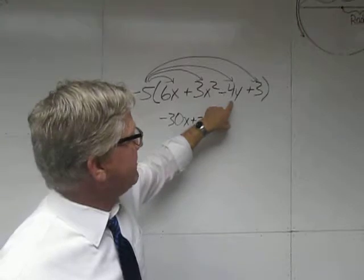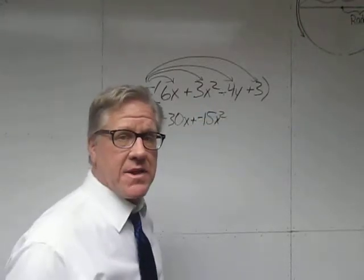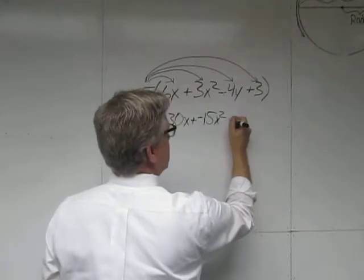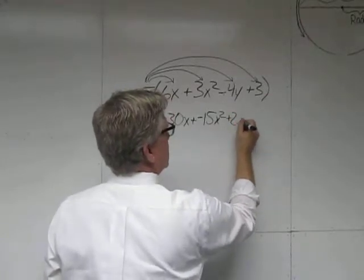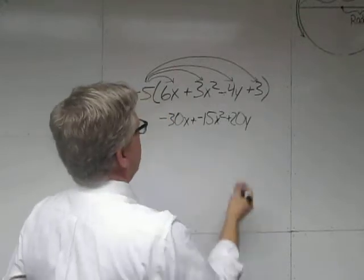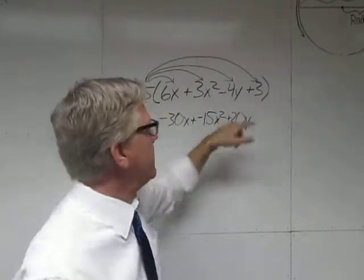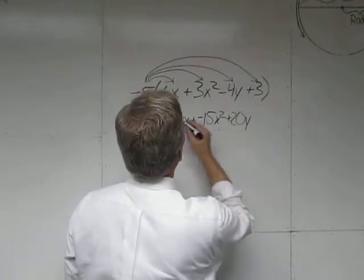Negative 5 times negative 4y, negative times a negative is a positive, so let's go like this. 4 times 5, 20. And then let's go negative 5 times 3. Negative 5 times 3 is negative 15.